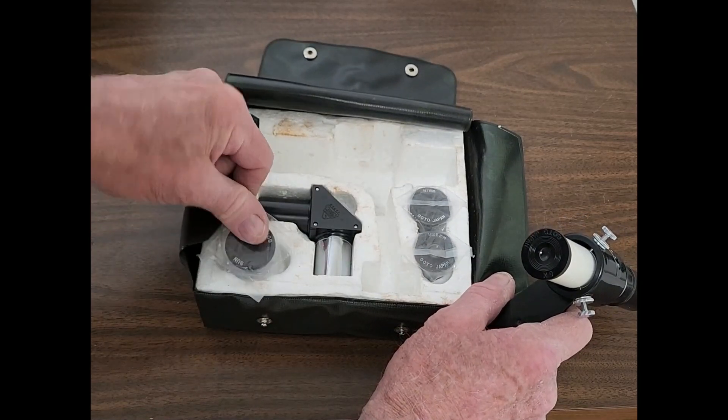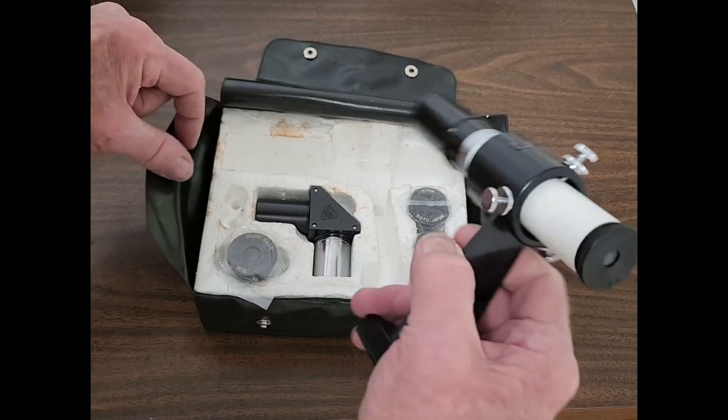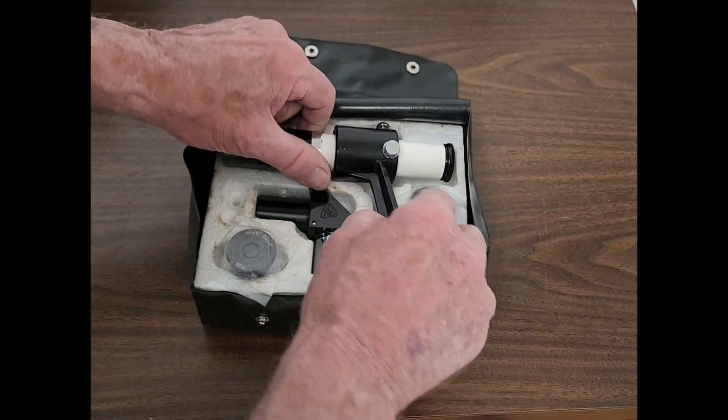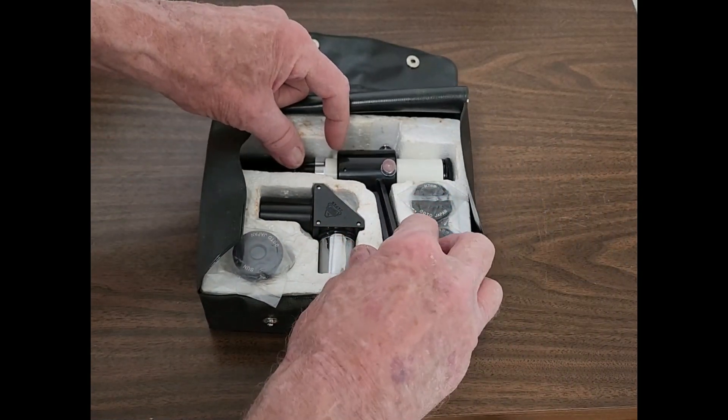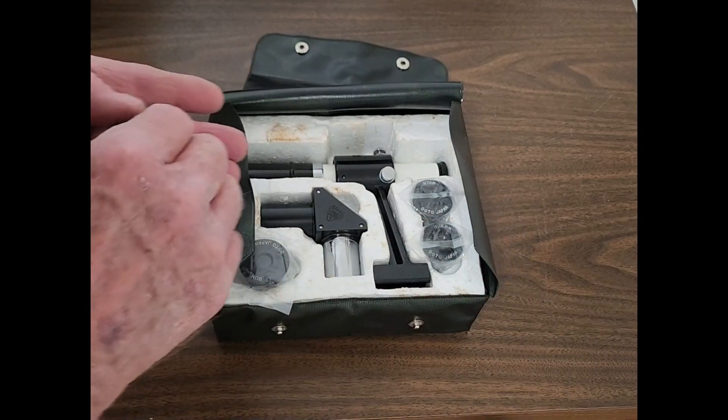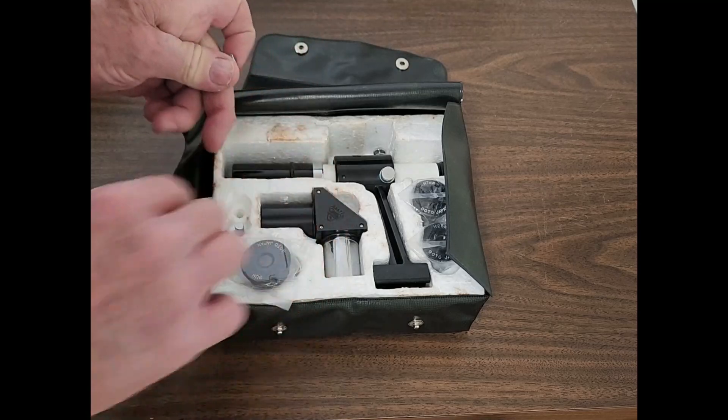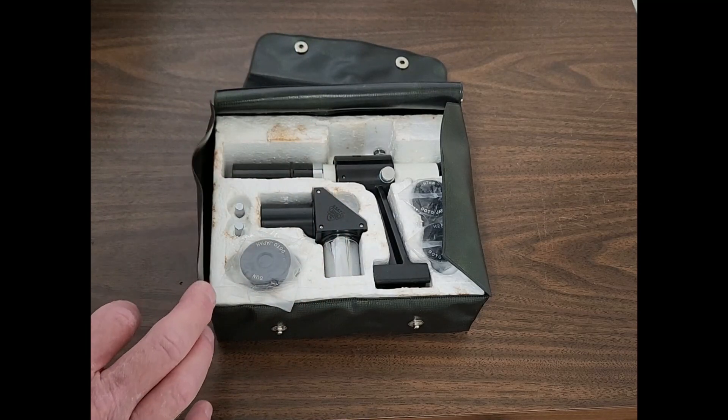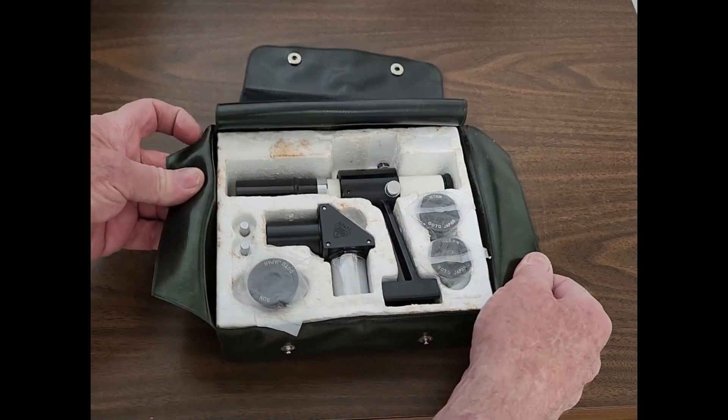There's a solar filter that you never use anymore. We don't dare use them. They're dangerous. There's how the finder goes in. This is the star diagonal. There's even a place for the two little finder mounting screws. Isn't that cute?